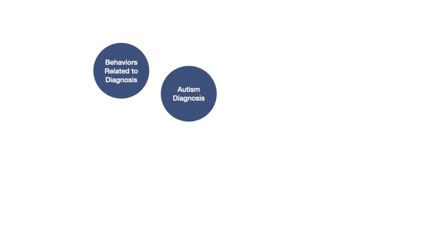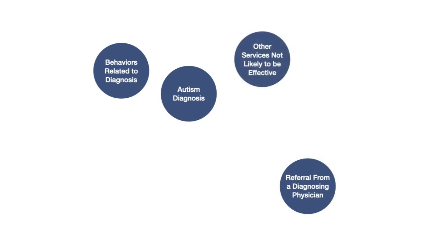Although you should check with each insurance company to determine their specific criteria, some common criteria include: a diagnosis of autism spectrum disorder, behaviors or deficits relating to the qualifying diagnosis, a referral from a diagnosing physician, and that other less expensive services are not likely to be effective.